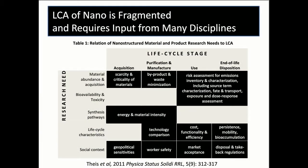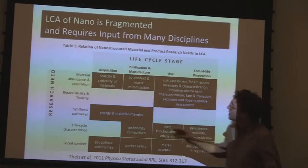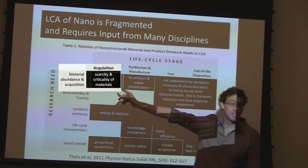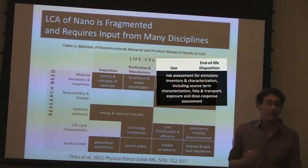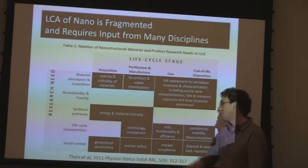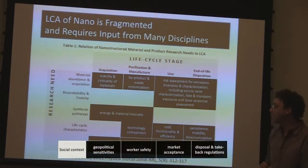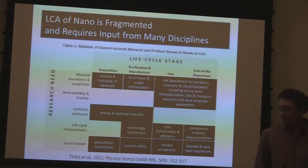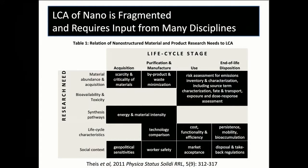A review of published life cycle assessments of nanomaterials shows that research is generally fragmented. Some people address use of critical or scarce materials; a lot of research covers risk, fate, and transport; some address energy intensity of manufacturing; and there's great work on social impacts across the life cycle. But none of these have been integrated into a comprehensive whole. Research from many disciplines — toxicology, process engineering, social science — is needed to inform LCA of nanotechnology.